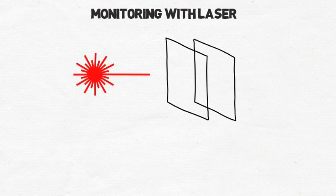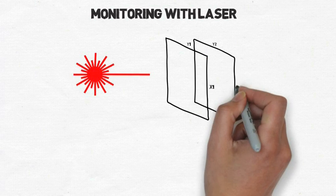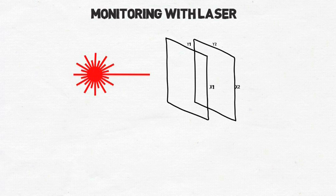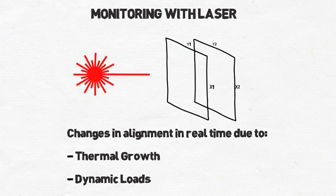Monitoring live with a laser system, the changes in alignment can be seen in real time. Once the machines reach a stable condition, the monitoring system will provide the actual positional change data, whether it is due to thermal growth or dynamic load shifts. This makes it the most accurate way to determine machine movement.